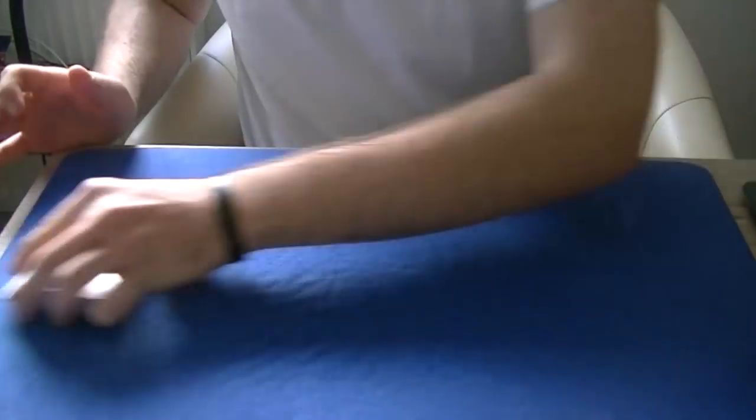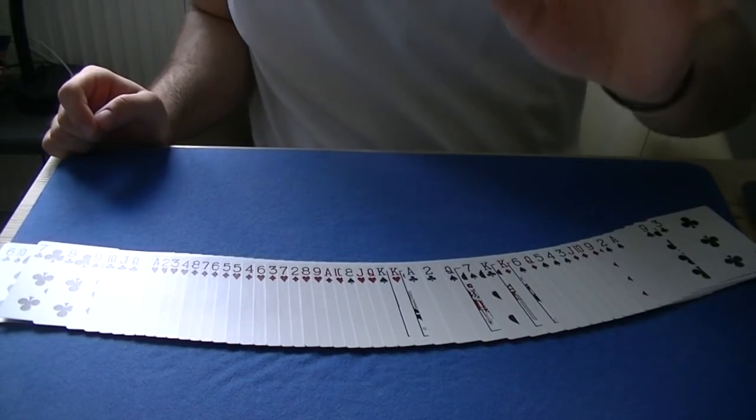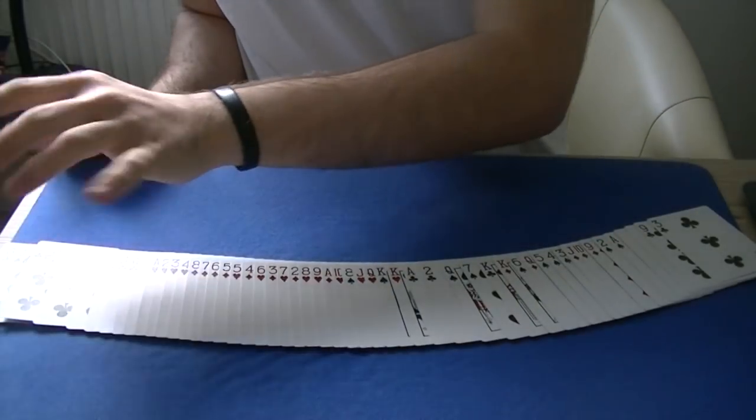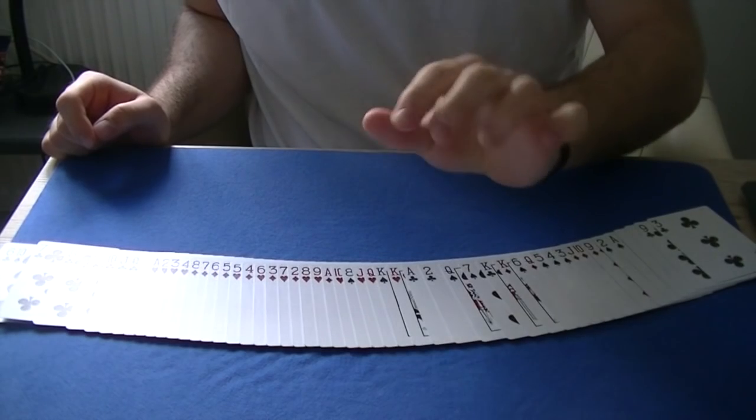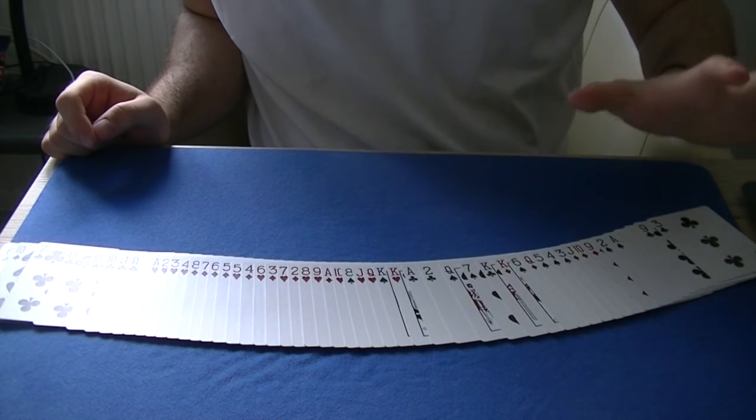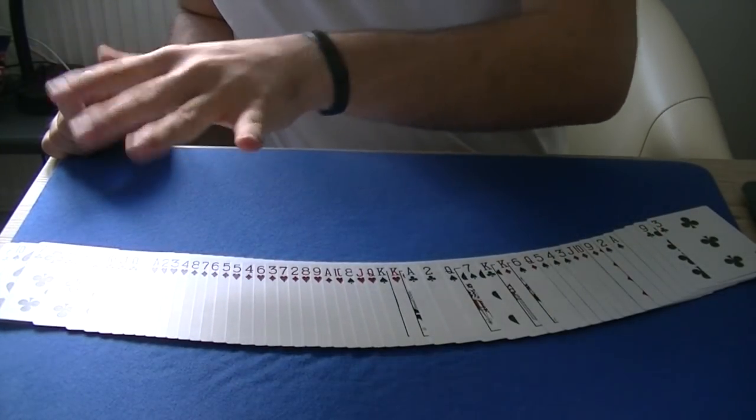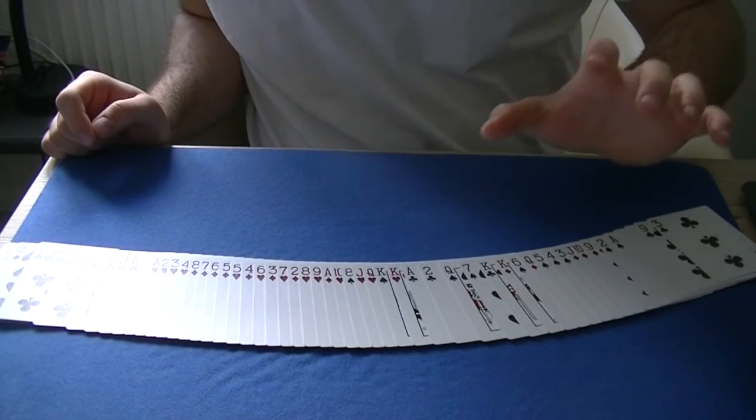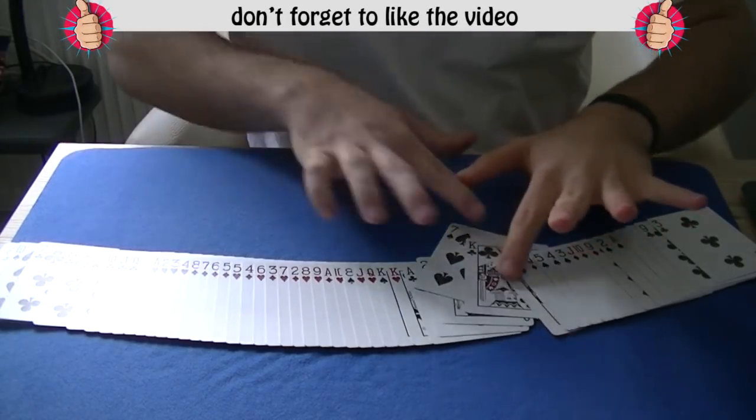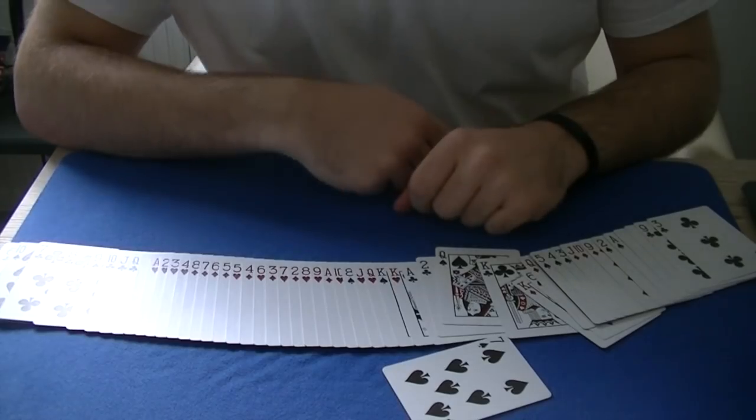I'm gonna find your card by just spreading the pack and I'm gonna try to feel the location of your card. Remember this is one of the oldest tricks in magic and I believe that your card was the seven of spades.